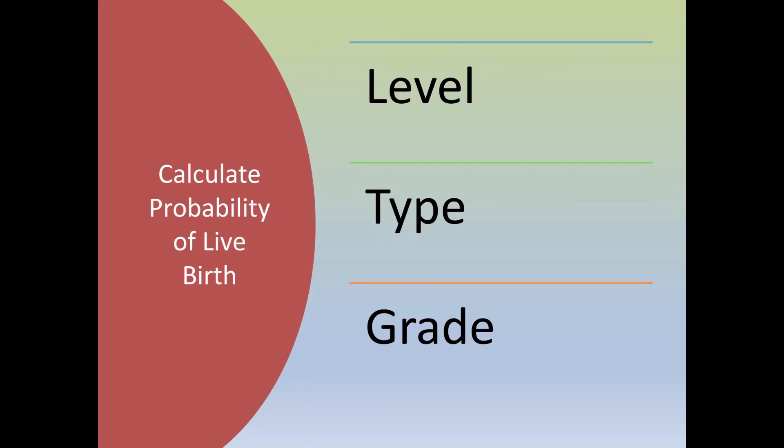Using these three characteristics — the level of high or low, the actual type of mosaic whether it's segmental or one chromosome or two or three or more — as well as the grade, we can actually calculate the probability that your mosaic embryo will translate into a healthy baby.